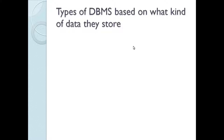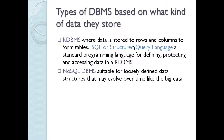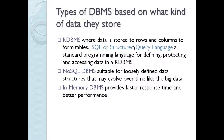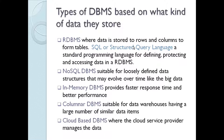Types of DBMS based on what kind of data they store: the first and most important is the RDBMS, where data is stored in rows and columns to form tables. Alongside RDBMS we must mention SQL, or Structured Query Language, a standard programming language for defining, protecting, and accessing data in an RDBMS. Next is NoSQL DBMS, suitable for loosely defined data structures that may evolve over time, like big data. In-memory DBMS provides faster response time and better performance. Columnar DBMS is suitable for data warehouses with large numbers of similar data items. Cloud-based DBMS is where the cloud service provider manages the data.